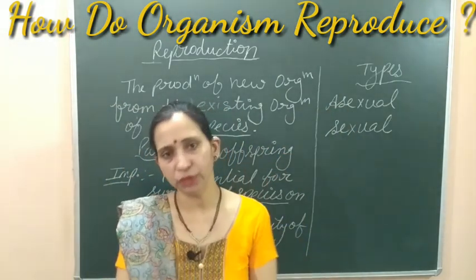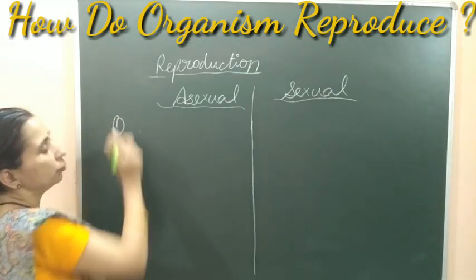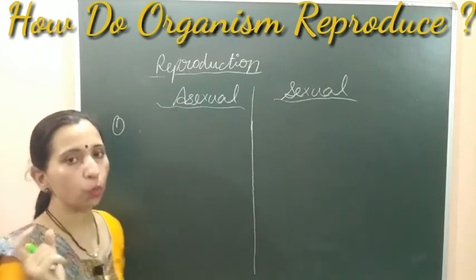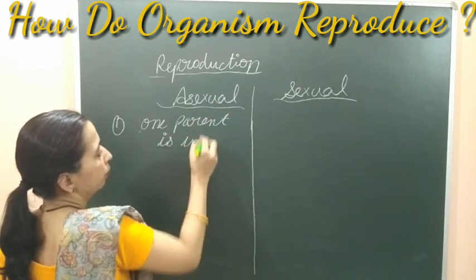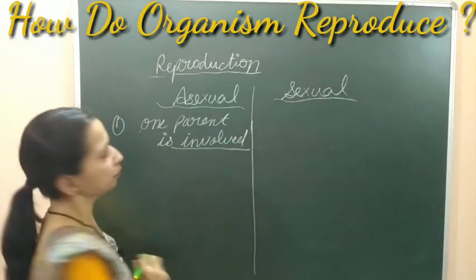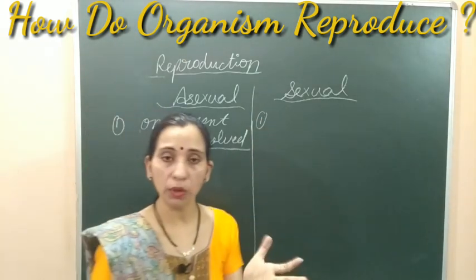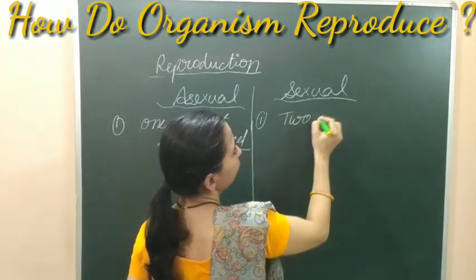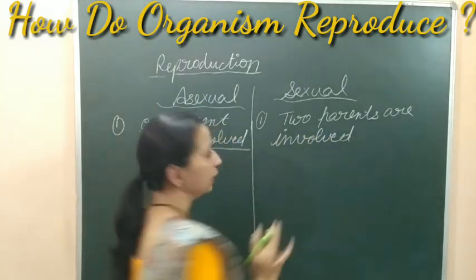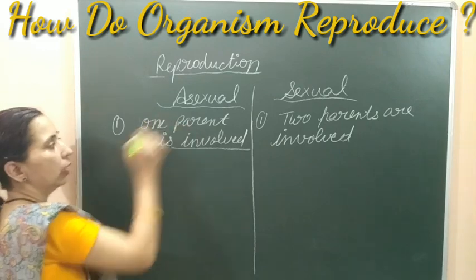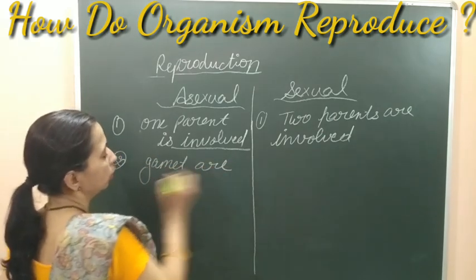Let's compare asexual and sexual reproduction. The first difference: in asexual reproduction only one parent is involved, whereas in sexual reproduction two parents are involved — one male and one female. The second difference: in asexual reproduction no gamete formation takes place — gametes are not formed — but in sexual reproduction, gamete formation does occur.